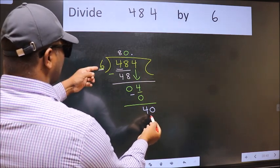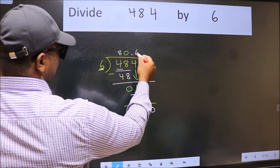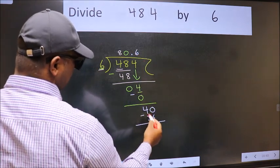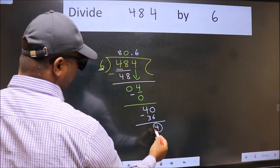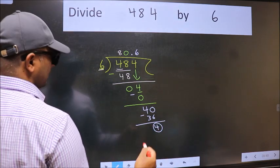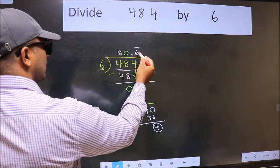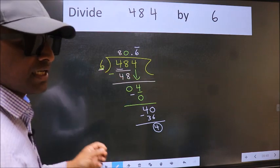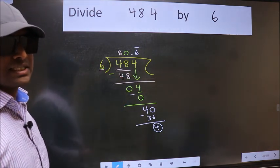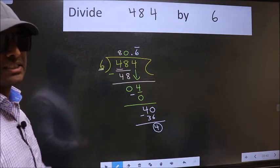A number close to 40 in 6 table is 6, 6, 36. Now we subtract. We got 4 again. That means, we get bar on this number. Did you understand where the mistake happens? You should not do that mistake.